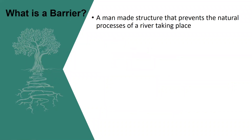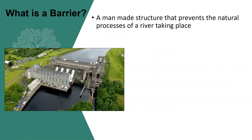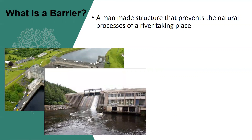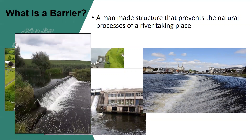So what is a barrier? What we consider as a barrier is a man-made structure that prevents the natural process of a river from taking place. Barriers come in many shapes and sizes and not all are as obvious as being a barrier as others. Here we have some obvious hydroelectric stations, but you can also have weirs that are pleasant to look at but can be a major obstruction to fish and sediment movement.